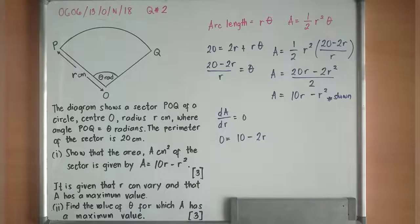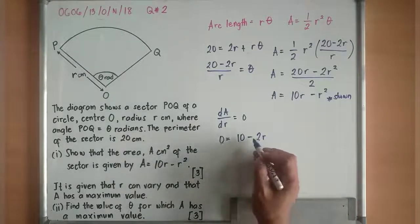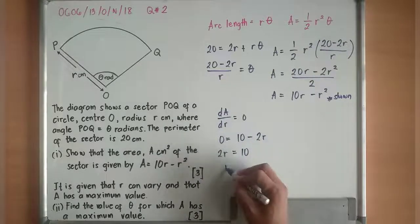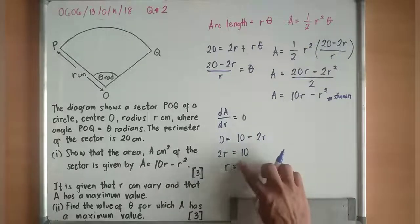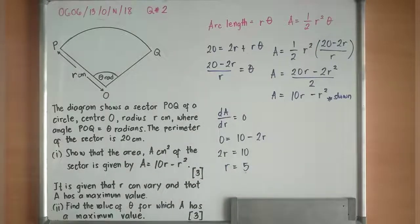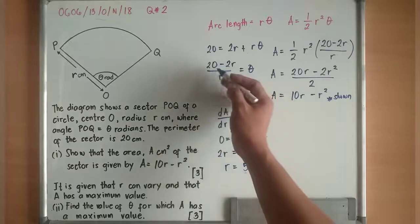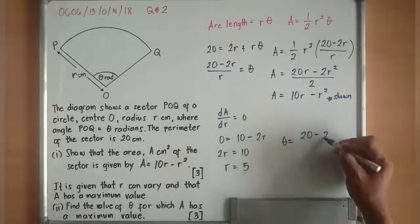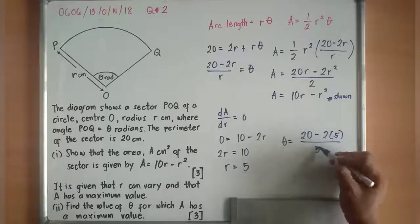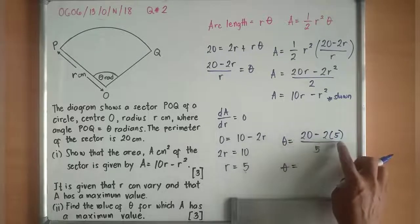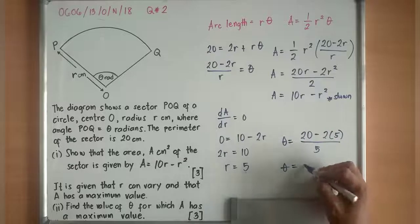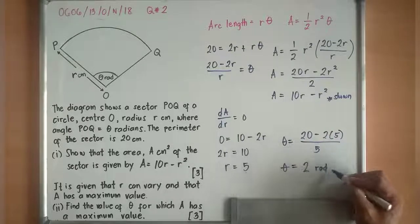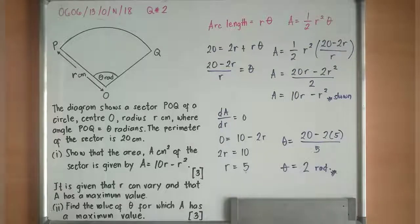We need to find the value of R. Move the 2R: 2R equals 10, so R equals 5. But I'm not looking for R, I'm looking for the value of theta. Theta equals 20 minus 2R over R. So theta equals 20 minus 2 times 5 over 5, which equals 2 radians. This is the value of theta for which A has a maximum value.